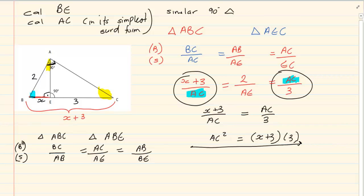Remember, big triangle on top, small triangle at the bottom. Now fill in what you have. Do we have BC? Yes we do. It is X plus 3. Do we have AB? Yes we do. It's 2. Do we have AC? No. Do we have AE? No. AB? Yes. It's 2. BE? Yes. It's X. Now look at what we have here.